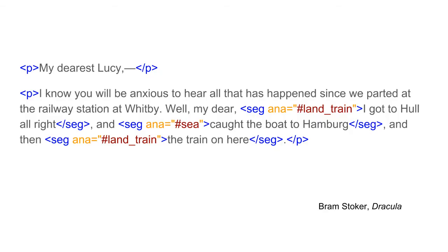Or I could choose to identify more precisely which parts of the paragraph speak of which type of travel. In this case, I could use the seg element to wrap each sentence speaking of a different type of travel, and then put the ANA attribute on each of these seg elements, pointing to the relevant category of travel each time.